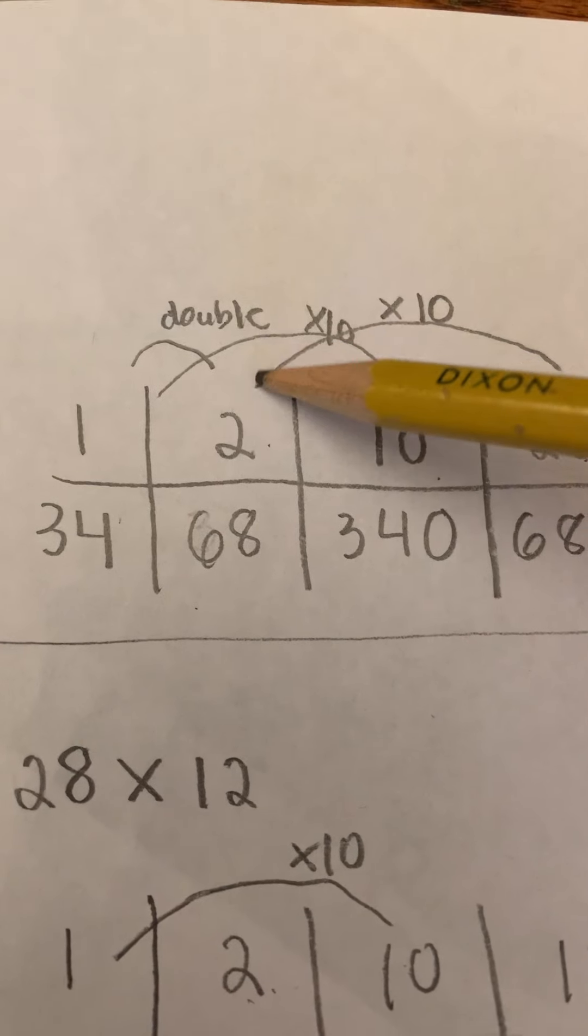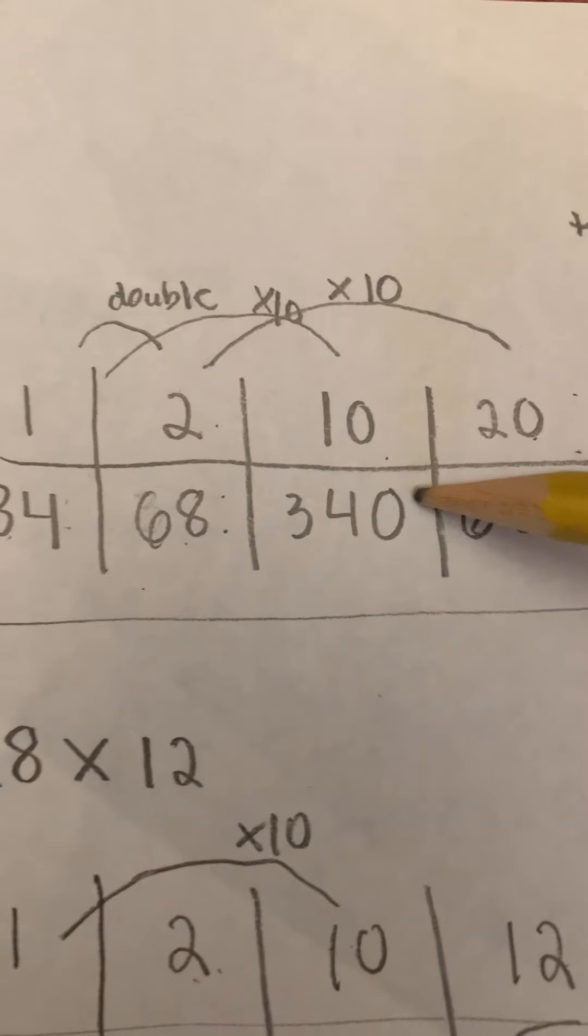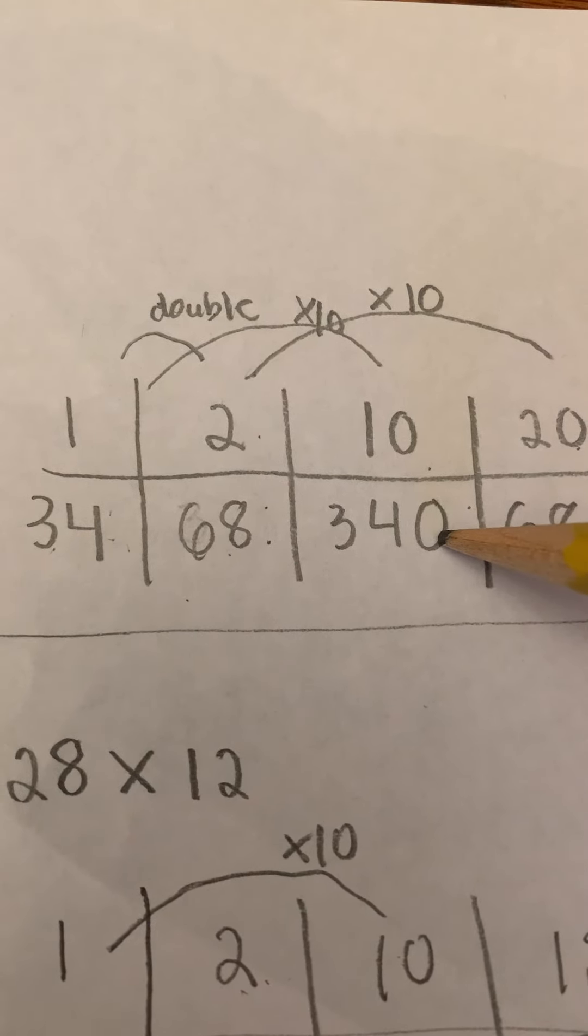34, and when we doubled it, double 30 is 60, double 4 is 8. Multiplying by 10, I take this number, move the 34 over, put the 0 to hold the 1's place.